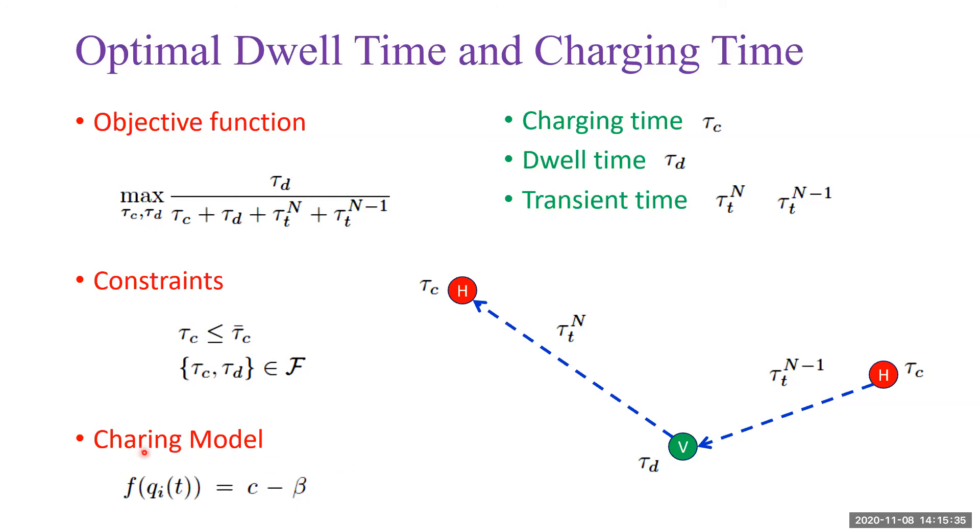If we assume the charging model has this form, c is the charging rate and β_s is the sensing cost. Then the optimal charging policy is to fully charge the battery.